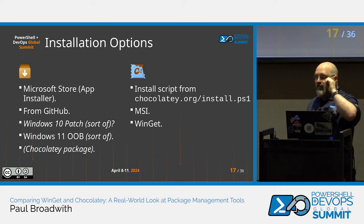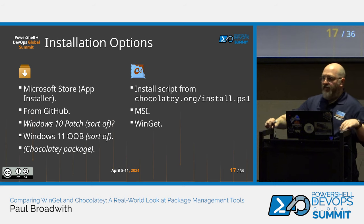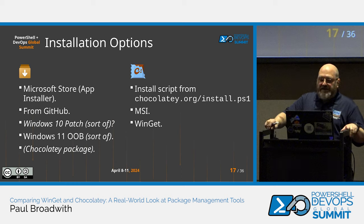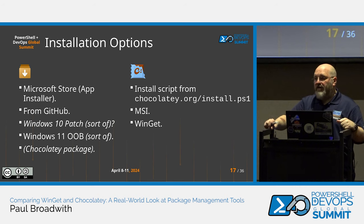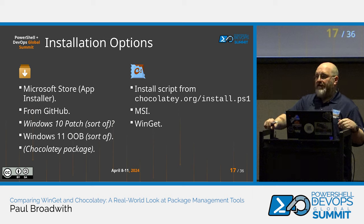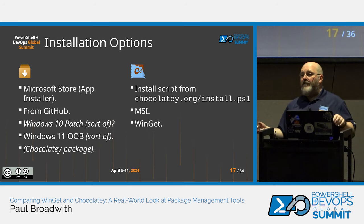For Chocolatey CLI, the traditional method is the PowerShell script from chocolatey.org/install — we always recommend reading code you download before executing it. That's been in place for about a decade. There's also an MSI for version 2 of Chocolatey CLI, which can be installed traditionally or silently from the command line. Finally, there's a WinGet manifest for Chocolatey, so 'winget install Chocolatey.Chocolatey' will install it. There's also a WinGet package for Chocolatey GUI maintained by the community, though that's not something we maintain.